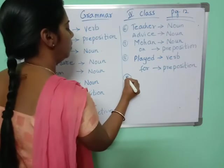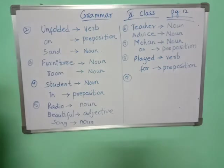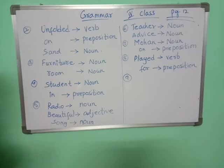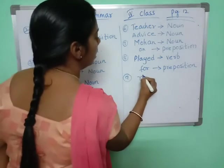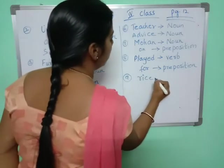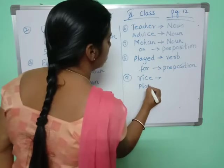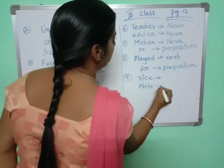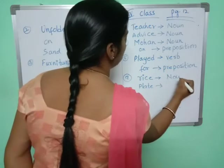Ninth one: The rice was steaming on a plate. 'Rice' is underlined and 'plate' is also underlined. Both are nouns.